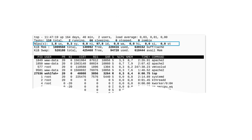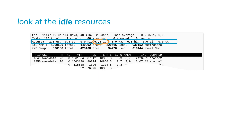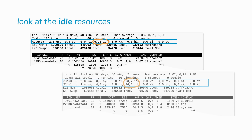The numbers in the CPU line let you dive deep into the load of your system. For the sake of this lesson, let's focus on the value labeled `id`, which stands for idle. This number, measured in percent, tells you how many percent of CPU resources are currently unused and therefore idle. If you see any number greater than zero, you know your system has resources left to handle additional processes.